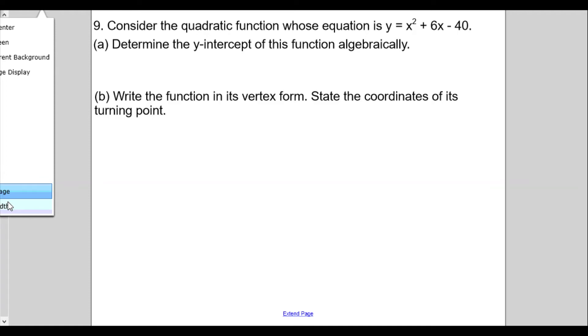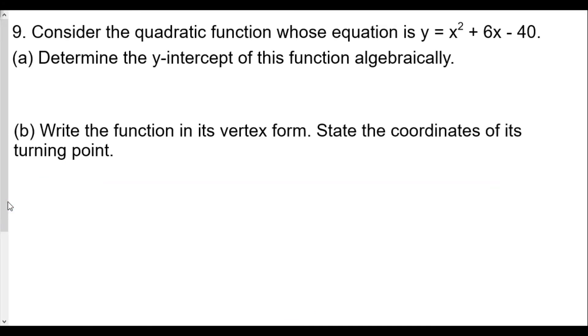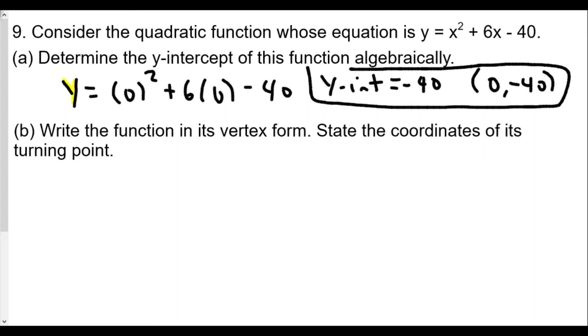Number 9: Consider the quadratic function whose equation is y = x² + 6x - 40. Part (a) determine the y-intercept of this function algebraically. Well the y-intercept is when x equals 0, so we're going to plug in: y equals 0 squared plus 6 times 0 minus 40. Our y-intercept equals negative 40, or as a coordinate, 0 comma negative 40. That's pretty straightforward.